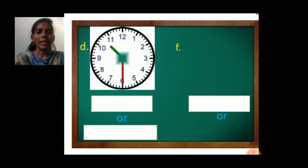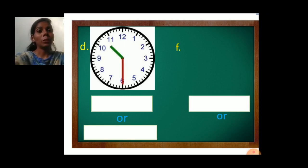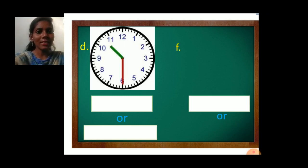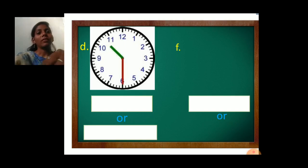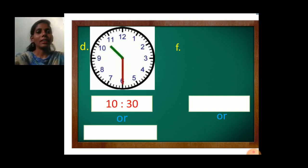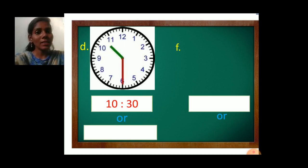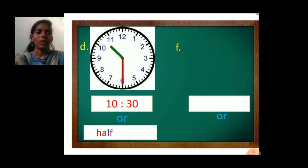Next, D. Now tell me where is the hour hand — it is between 10 and 11, but it crossed number 10, and the minute hand is at number 6. It means 30 minutes and 10 hours. Always we will write hours first. So here, 10 hours 30 minutes — we separate hours and minutes by two dots. And instead of 30 minutes, we will write half past — not quarter past, because quarter past is for 15 minutes. So half past 10.